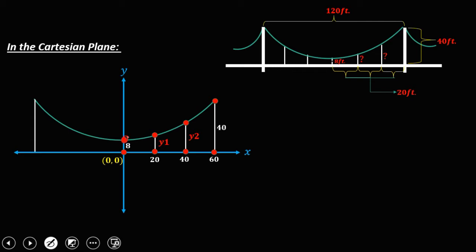The vertex point is at (0, 8). The top of the post is at (60, 40). The first vertical cable coordinate is (20, Y1), and the second vertical cable coordinate is (40, Y2).